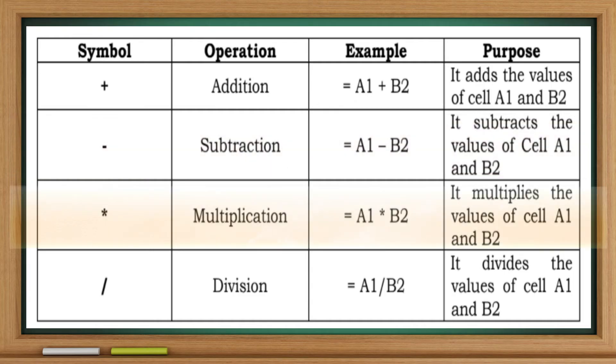Multiplication: equals A1 asterisk B2. It multiplies the values of cell A1 and B2. Division: equals A1 divided by B2. It divides the values of cell A1 and B2.